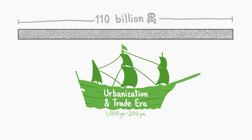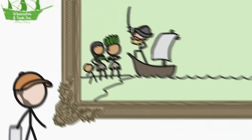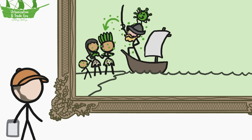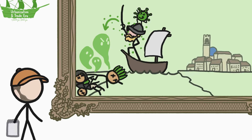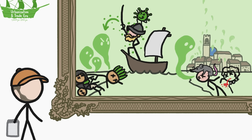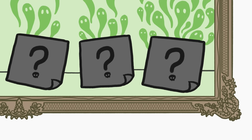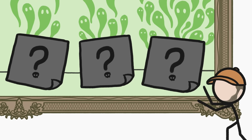During the third era, the urbanization and trade era, another 30 billion or so people lived and died. The beginnings of global travel brought unfamiliar diseases like the measles and flu to new lands, decimating entire civilizations. And since people lived more tightly packed than ever, plagues like, well, the plague spread quickly. Plus, other infections and parasites ran rampant, especially tuberculosis. And there were those three other killers that were still at it.